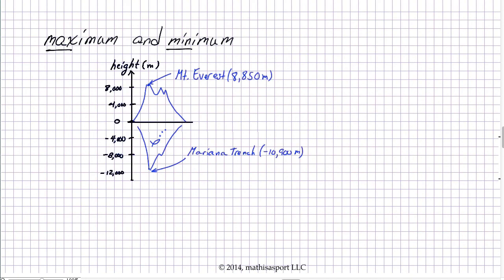Here, I have two heights represented, one, the tallest point above sea level on the earth, and that's Mount Everest at 8850 meters, and then the minimum height above sea level, and that's the Mariana Trench at negative 10,900 meters. So, of course, we would call Mount Everest the maximum height. We'd call the Mariana Trench the minimum height.